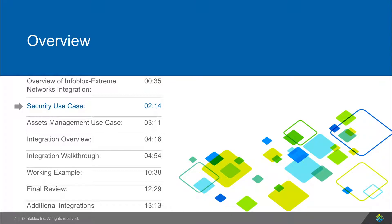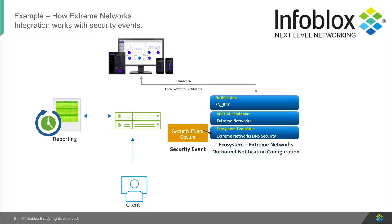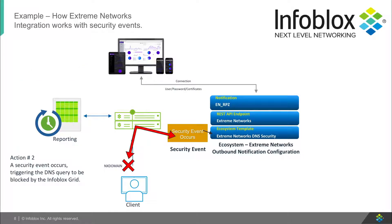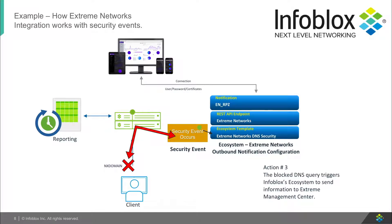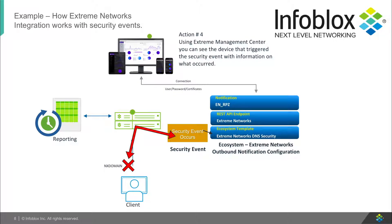Let's look at the security use case. Here, a user tries to make a DNS request to a domain that isn't allowed. Next, the DNS request is blocked by Infoblox. Infoblox ecosystem templates are then triggered, sending information about the user to Extreme Management Center. Finally, the IP address is added to an in-system group, which you can use to create custom policies for. With these custom policies, you can change the user's access or remove them from the network automatically.